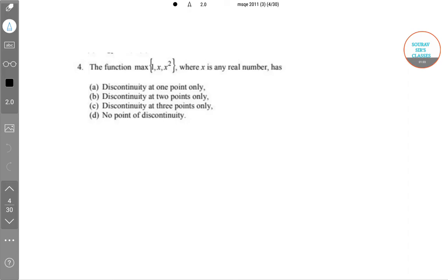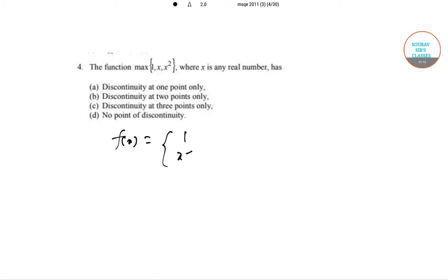The function maximum where x is a real number. Now they have given 1, x, and x square. So if x equals, we just proceed, 1 and x square have two values. So this is only possible when this lies between this and this one, anything otherwise. So here we just put into the functional structure.